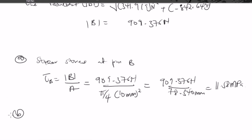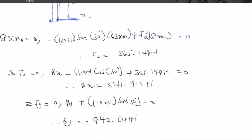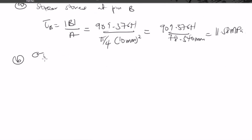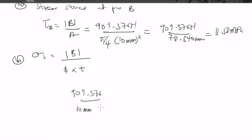For part B, we find the bearing stress in the bell crank at B. The bearing stress equals the resultant force divided by the diameter times the thickness: σ_b = 909.376 / (10 × 5). The diameter is 10 millimeters and the thickness of the bell crank is 5 millimeters, giving a bearing stress of 18.19 megapascals.